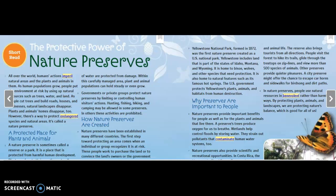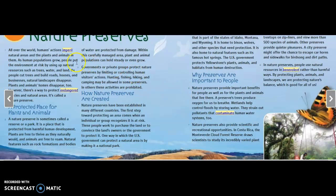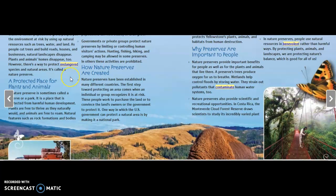The Protective Power of Nature Preserves. All over the world, humans' actions imperil natural areas and the plants and animals in them. As human populations grow, people put the environment at risk by using up natural resources such as trees, water, and land. As people cut trees and build roads, houses, and businesses, natural landscapes disappear. Plants and animals' homes disappear, too. However, there is a way to protect endangered species and natural areas, and it's called a nature preserve.